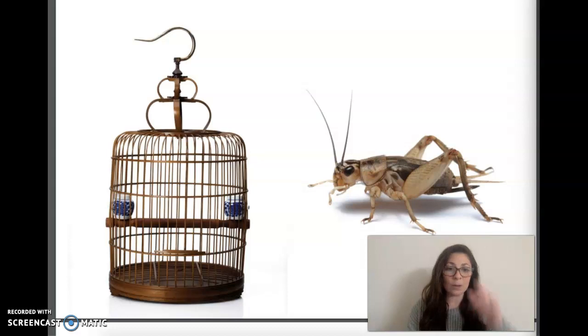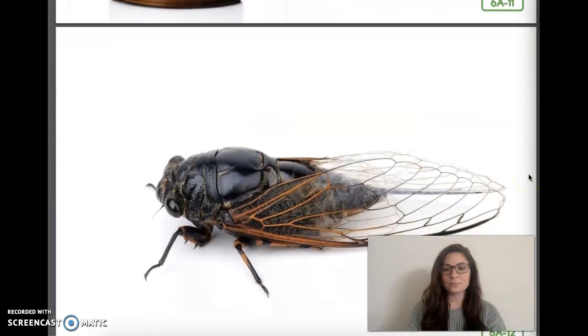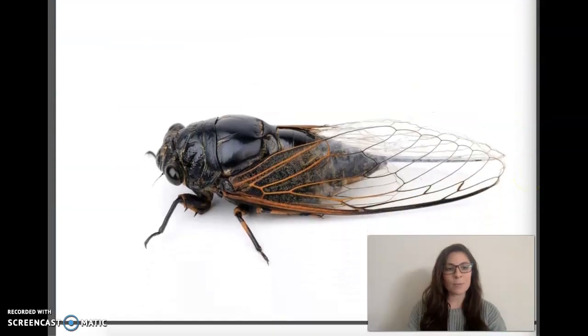But before I leave today, I want to introduce you to another singing insect. These insects are often mistaken for grasshoppers and crickets because they look a lot like us. Does anyone remember what the name of this insect is called? This is a cicada. Cicadas are related to aphids, leafhoppers, and spittlebugs.